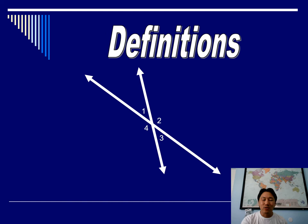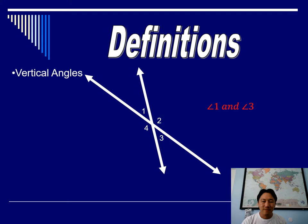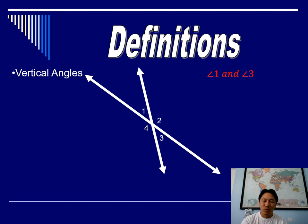First off we have vertical angles. Vertical angles are angles that are opposite each other. For example, angle 1 and angle 3 are directly opposite each other — we call those vertical angles. You can think of it like a V where the tips of the V's touch each other. Also, angles 2 and 4 are across from each other, so they are also vertical angles.